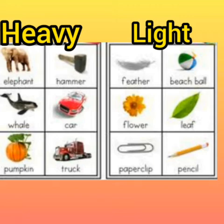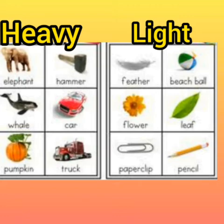Now for light objects: a feather and a puffball are very small and light. Plastic balls are very small and light, but leather balls are full and heavy. Small balls are very light. Flowers and leaves are very light. You can also see a paper clip — it is very small and light.